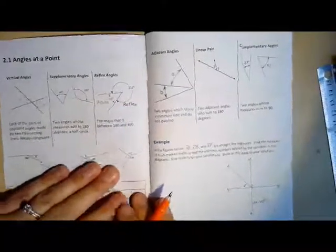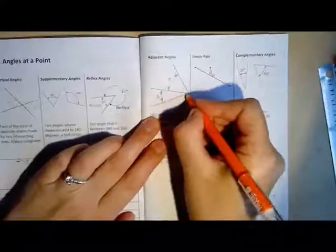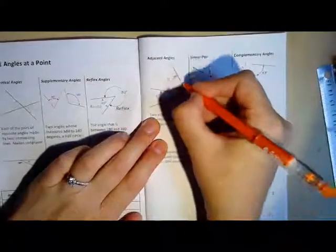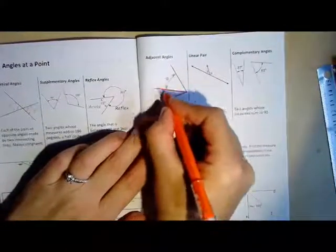Adjacent angles, like so, are two angles that share a common side. I'm going to highlight that common side. They don't overlap.